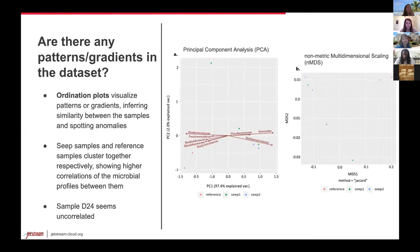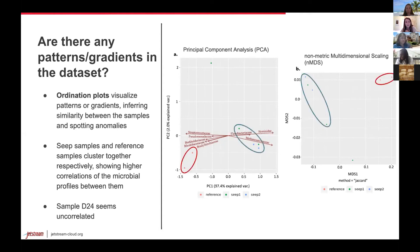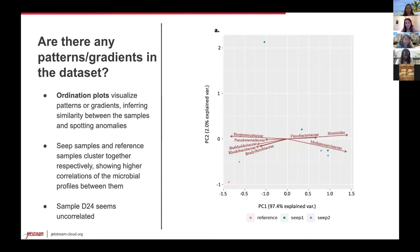To look at the relationship between the samples and spot anomalies based on the taxonomic profiles, I used ordination plots such as a principal component analysis (PCA) and a non-metric multidimensional scaling (NMDS). Both of these plots show that the seep samples and the reference samples cluster together respectively, showing higher correlations of the microbial profiles between them.